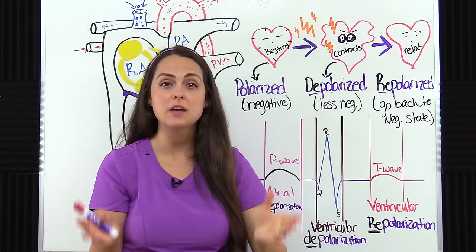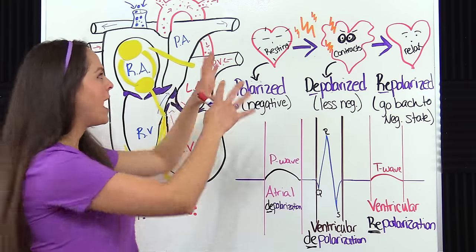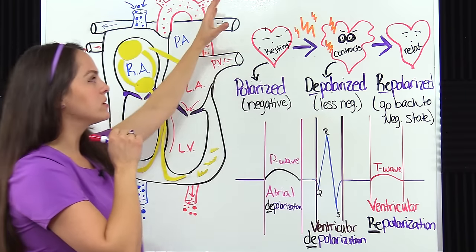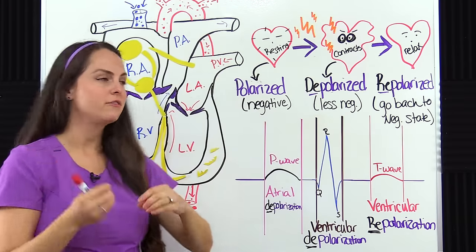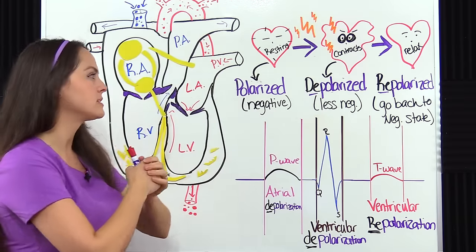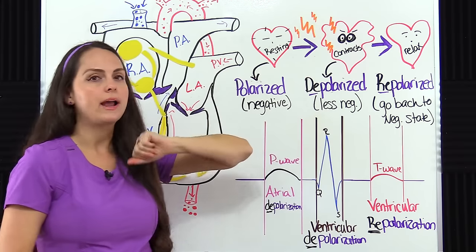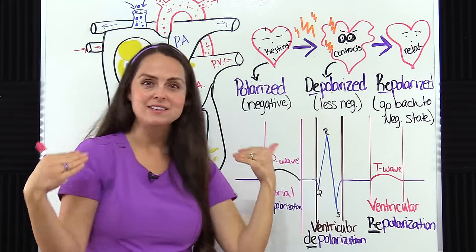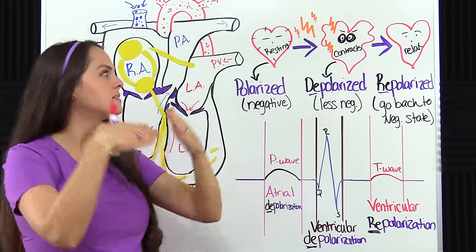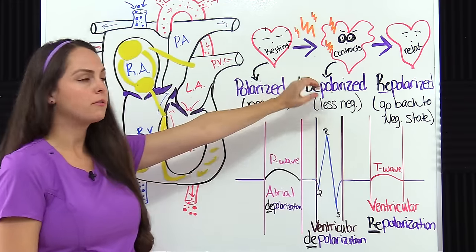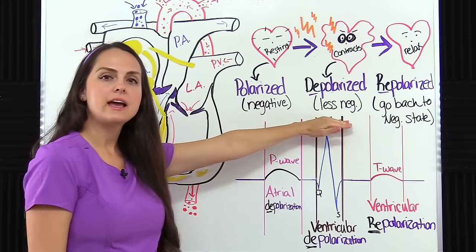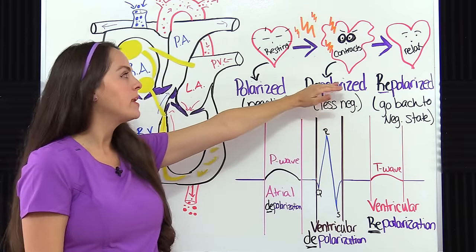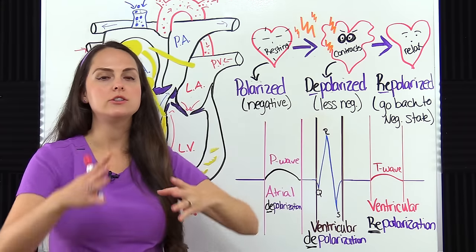Whenever this cell receives a jolt of electricity from the electrical conduction system, it changes that cell membrane and causes it to be more permeable. So that sodium can get inside the cell, and it changes the cell's state from being negative to less negative - a little bit more positive, because sodium is positive - and it causes depolarization. Whenever the cell becomes depolarized, it causes it to contract.